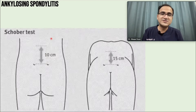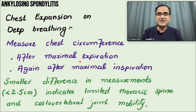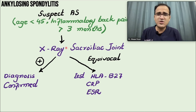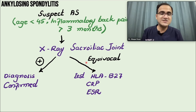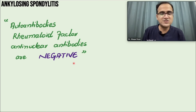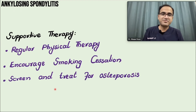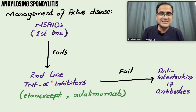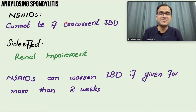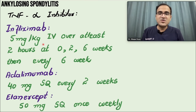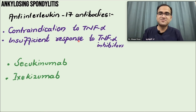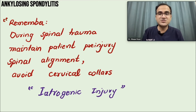Diagnostic approach: FABER test and Schober's test are key provocation tests; chest expansion is measured; X-ray of the sacroiliac joint is the most important test - if positive, diagnosis is confirmed; if negative, HLA-B27 can be tested but is non-specific; antibody tests are negative. X-ray of the spine may show dagger sign and bamboo spine. Treatment: supportive care, NSAIDs first-line, TNF-alpha inhibitors second-line, anti-interleukin-17 antibodies third-line, advanced treatments for refractory cases. Standard spinal alignment methods are contraindicated.